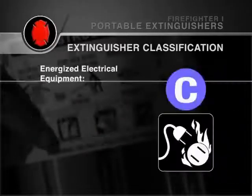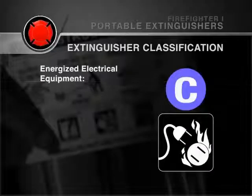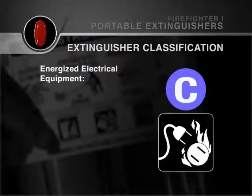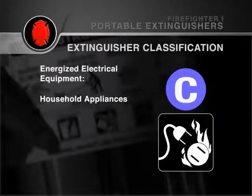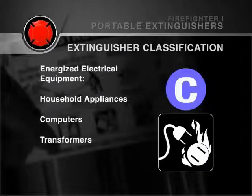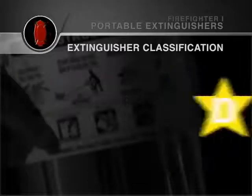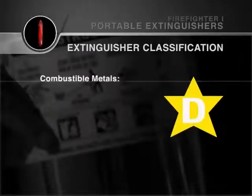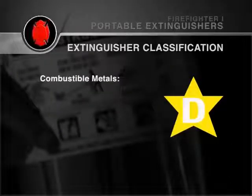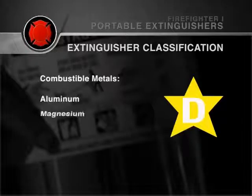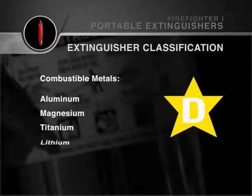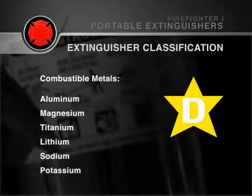Class C fires are found in energized electrical equipment such as household appliances, computers, and transformers. Class D fires involve combustible metals such as aluminum, magnesium, titanium, lithium, sodium, and potassium.